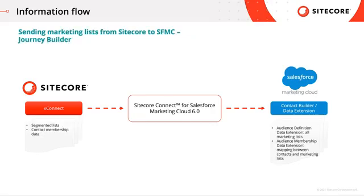For sending marketing lists from Sitecore to Salesforce Marketing Cloud into Journey Builder, the connector takes segmented lists and contact membership data from XConnect in Sitecore XP and pushes them into the audience definition data extension under all marketing lists, and the audience membership data extension where it creates the mapping between contacts and marketing lists — similar to how marketing lists are sent to Email Studio.